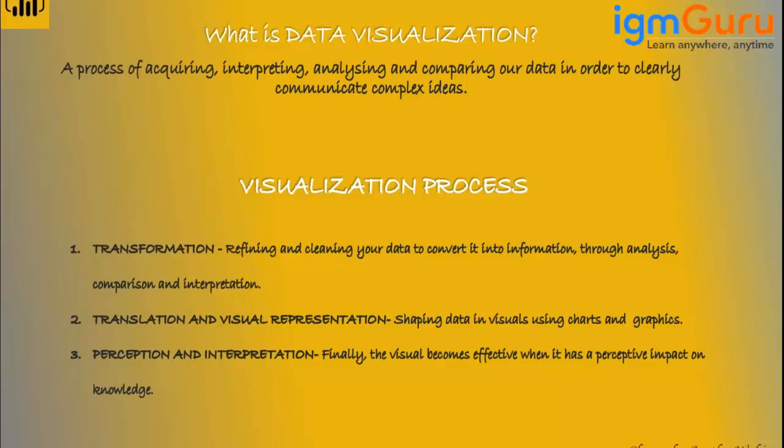The second part is called Translation and Visual Representation, which is basically the heart of the data visualization world. It involves shaping our data into visuals and charts. This means connecting multiple data sources to each other, creating visuals and graphics, making calculations, creating new columns, and building visual representations out of the data. All of that is covered in Translation and Visual Representation.